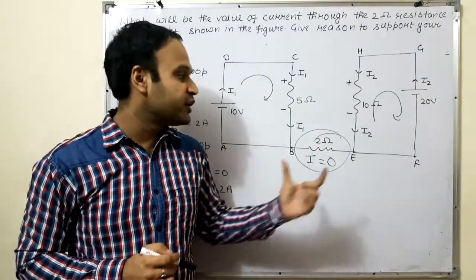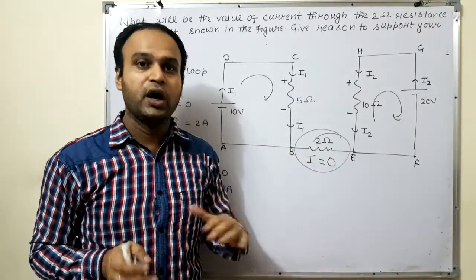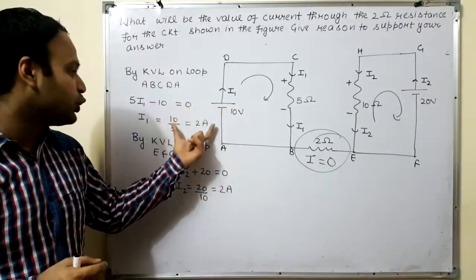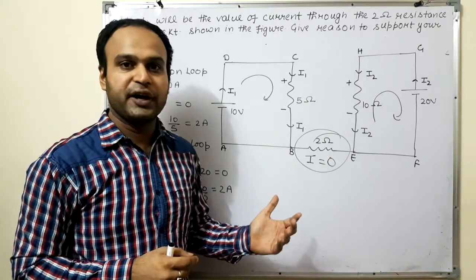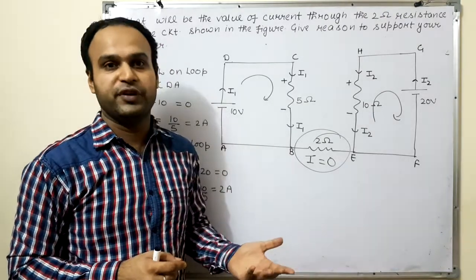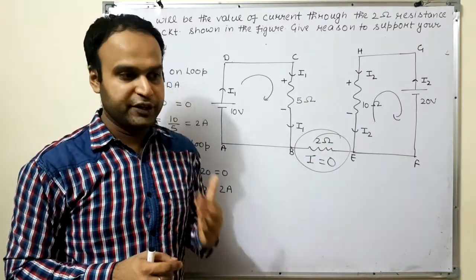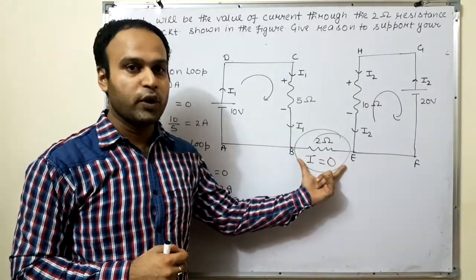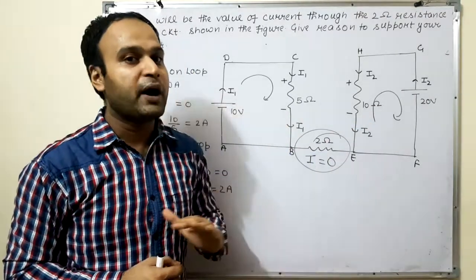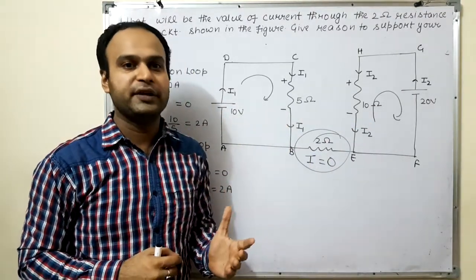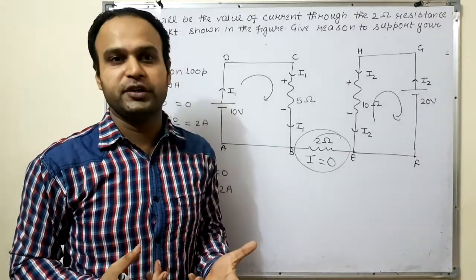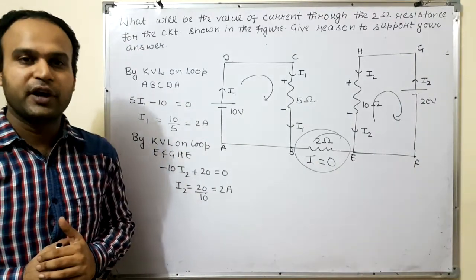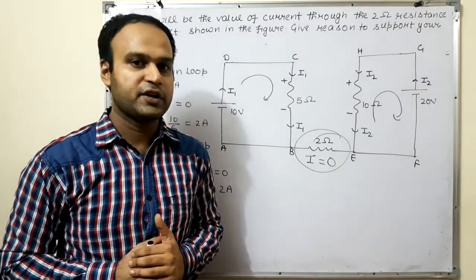There is no potential difference between B and E because if there was potential difference between B and E, then only current could flow. You can see that both currents are same but they are in opposite directions, so they will cancel out their effect. So there is no potential difference generated here. Or in other words, this 2 ohm resistance is not part of either loop. We can say it will not be included in the circuit. So your answer will be zero. Clear students? Any doubt and remaining questions we will discuss in the next video.